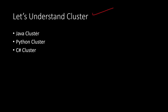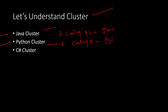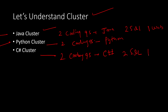Let's understand the clusters first. There are three clusters: Cluster 1 (Java), Cluster 2 (Python), and Cluster 3 (C#). In the Java cluster you get two coding questions and Java is allowed. In the Python cluster you get two coding questions and Python is allowed. In the C# cluster there are two coding questions and C# is allowed. Java and C# clusters also include two SQL questions and one web-based question. The Python cluster includes two SQL questions and 10 MCQs on cloud.